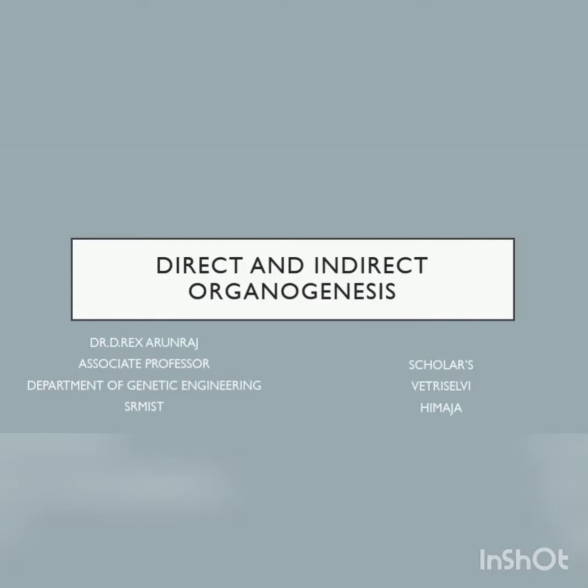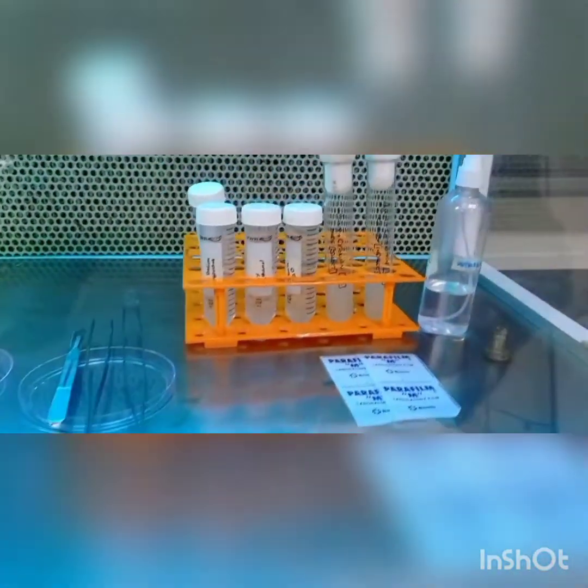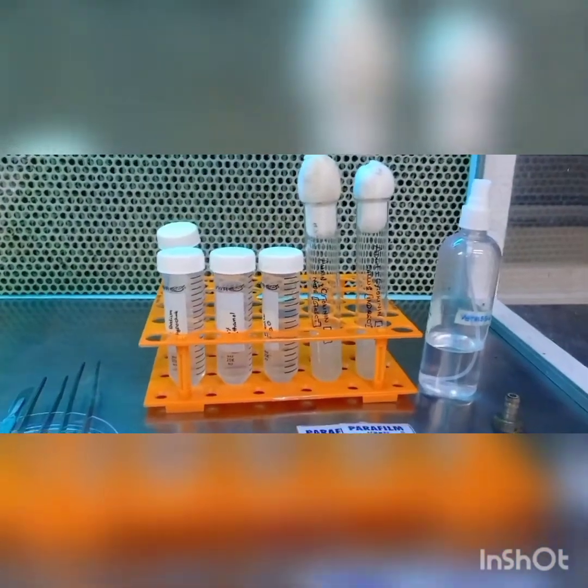In this class we are going to study about direct and indirect organogenesis in plant biotechnology. You must be familiar with concepts like totipotency, de-differentiation, and re-differentiation. In today's class we are going to study about direct and indirect organogenesis.